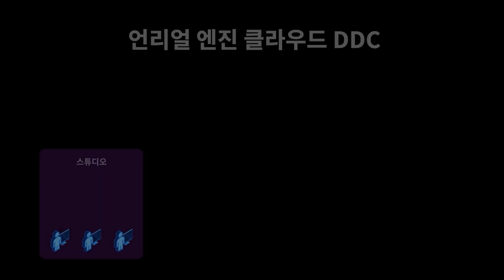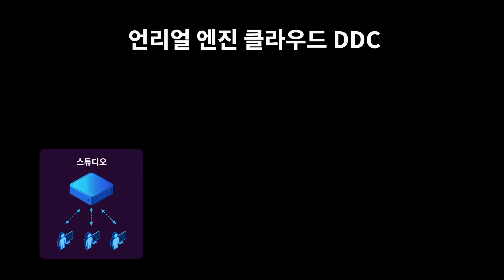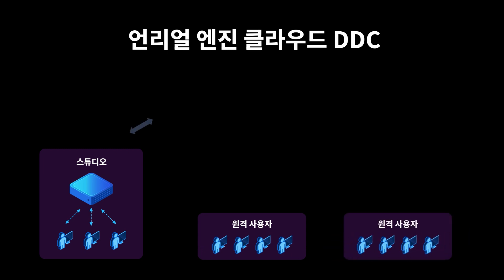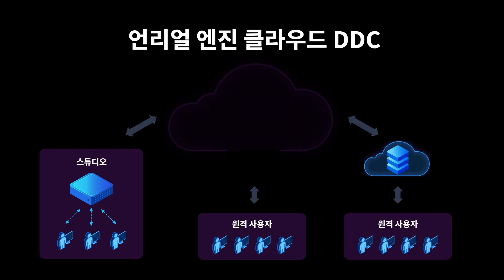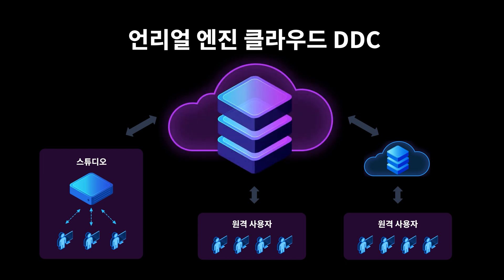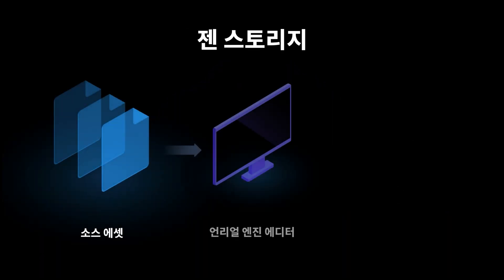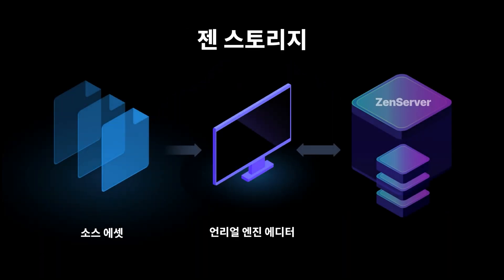New in this release is Unreal Cloud DDC, a self-hosted cloud storage system for the Unreal Engine-derived data cache. Designed for distributed users and teams, it enables you to efficiently share Unreal Engine cached data across public network connections. Our local DDC also now uses a new server architecture, offering improved data conditioning performance, faster load times and CI workflows, and other benefits.